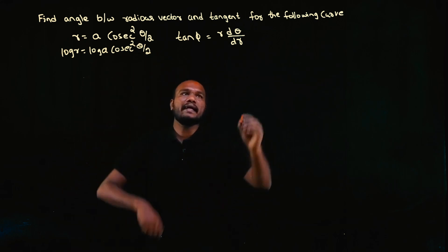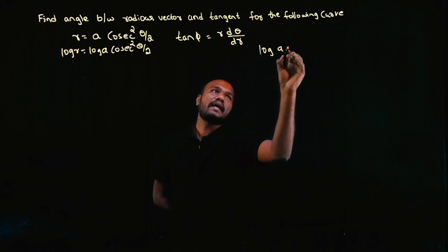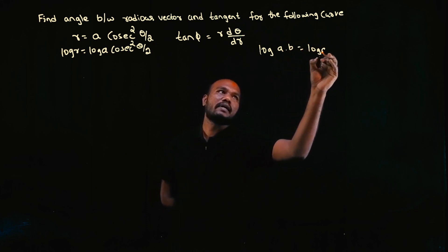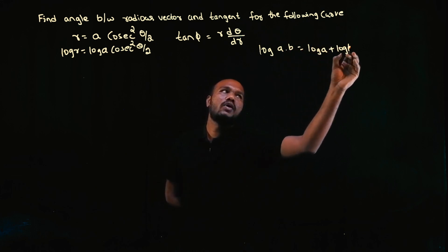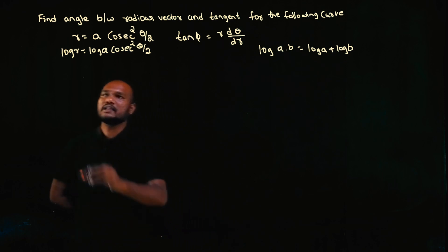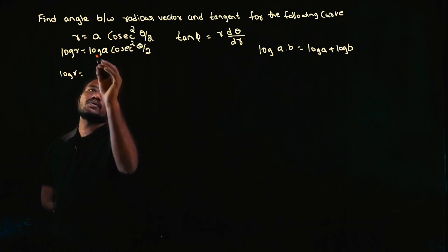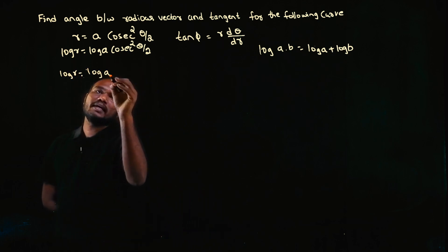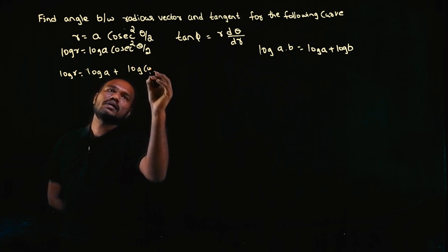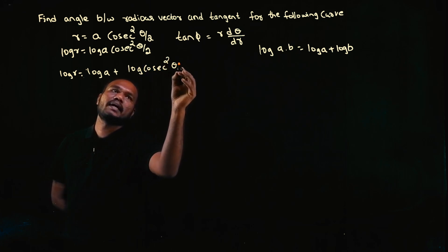This is in the form of log(a·b). Log(a·b) equals what? Log a plus log b. So log r equals log a plus log cosec²(θ/2).